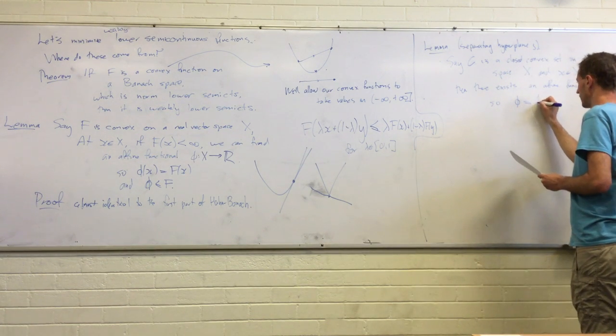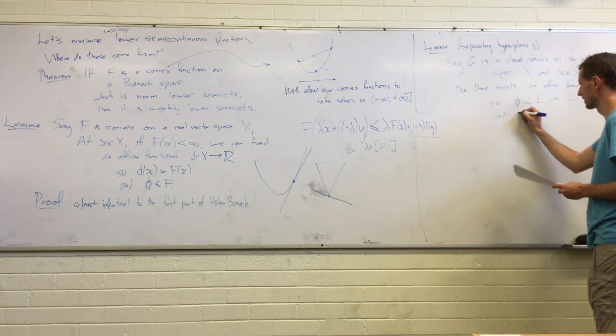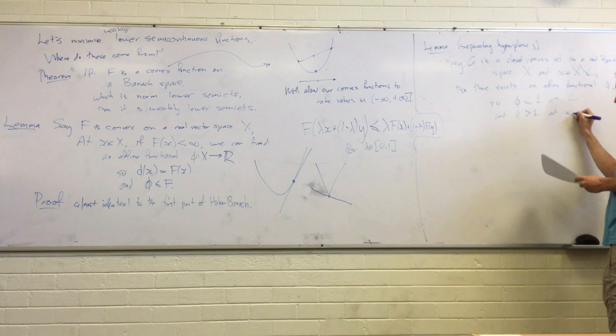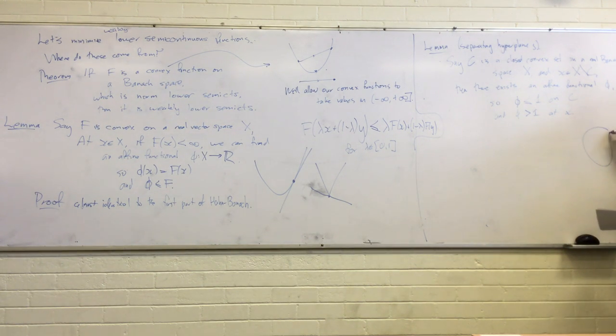So here, we just have a closed convex set C in a real Banach space X. And we've got x outside of this set. Then there exists phi in X* such that phi is less than or equal to 1 on C, and phi is strictly greater than 1 at x. So you should be thinking here, you've got some convex set here, and we've got some point outside of it, and we're finding this linear functional with a level set of phi at 1, I guess, is the way we set things up. It will actually pass between them, or maybe it only manages to touch the convex set at some point.